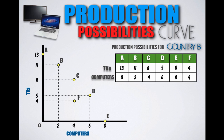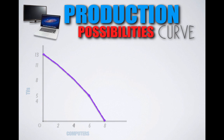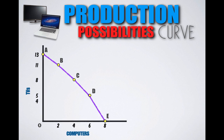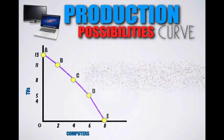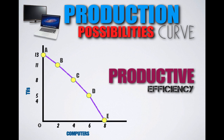With every possible production possibility combination plotted on this graph, we can now connect these points and create a production possibilities curve. This purple line represents the production possibilities curve for Country B — a visual representation of what they can possibly produce if they use all their resources efficiently. Each of these production possibilities represents productive efficiency for Country B, meaning they are producing TVs and computers to their full potential without wasting any resources.